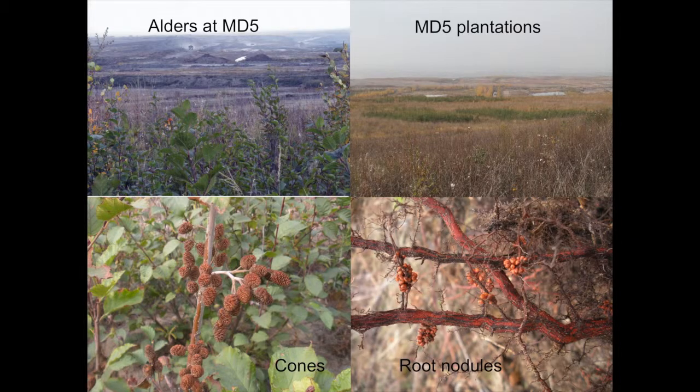Looking at some scenes through the years: the top left-hand side shows what the plantation looks like with the active mining site in the background. The top right shows what the plots looked like in September of 2012, and you can actually see two different plot areas. The plants were all extremely healthy, shown by the large numbers of cones, meaning they're in a very healthy state of reproduction. And if you look at the root zone of some of these plants, you can see extensive nodule formation — the plants in general were extremely healthy.